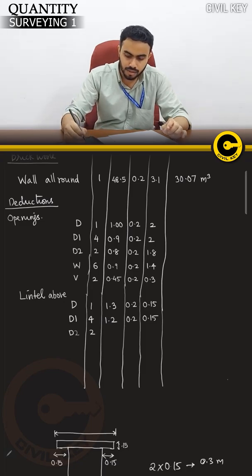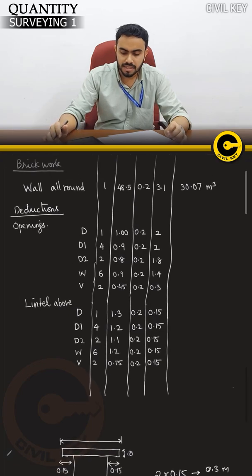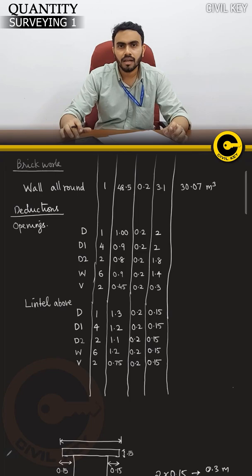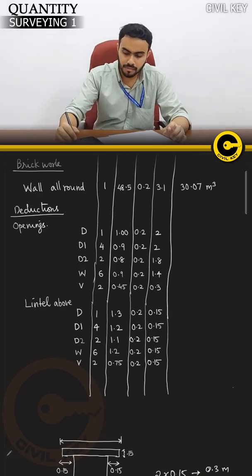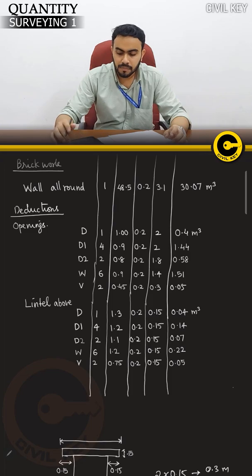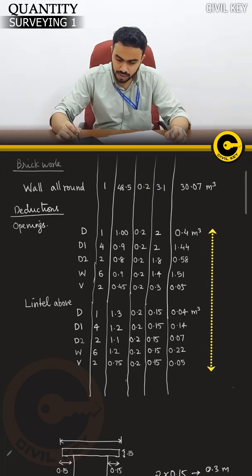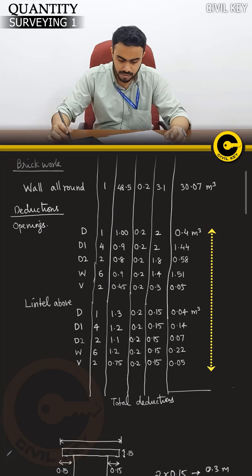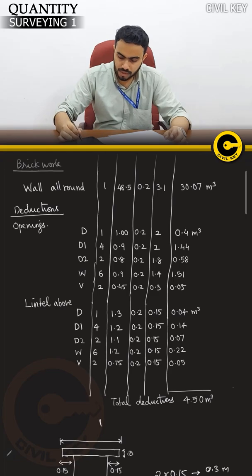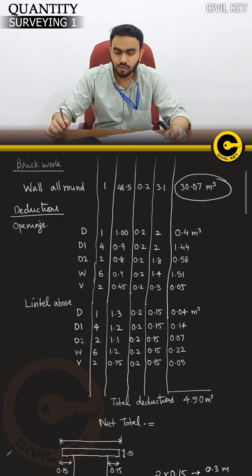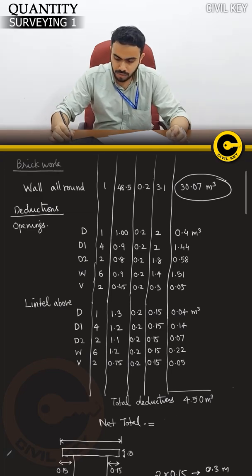For D2, the same method applies for total dimensions. This gives the quantity. Calculating and multiplying the values, total deductions for doors and windows equals 4.5 m³.